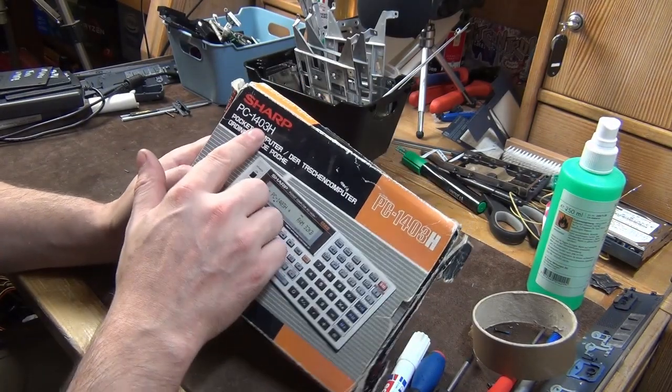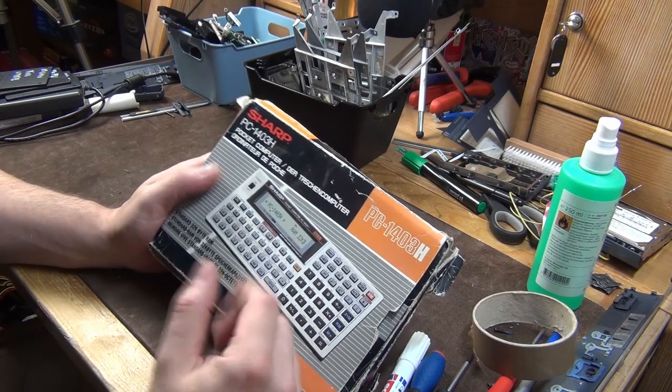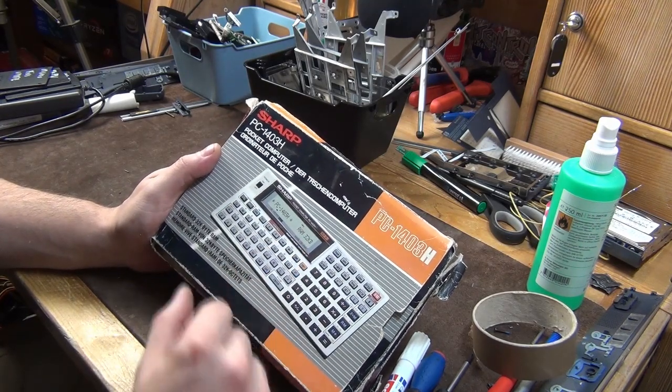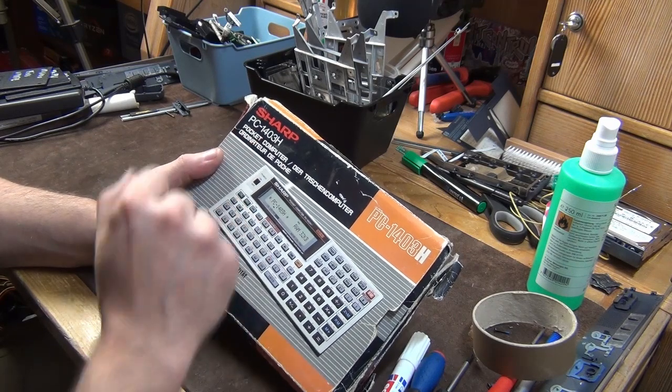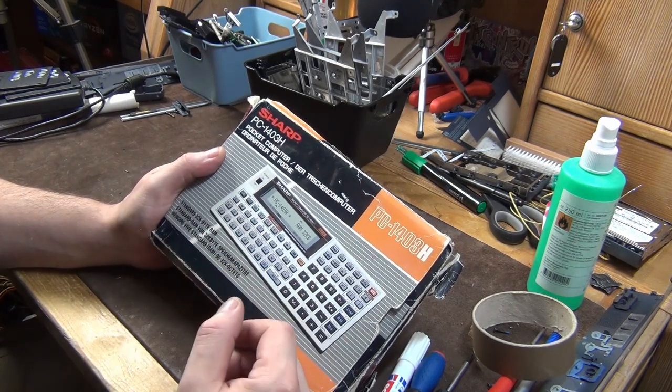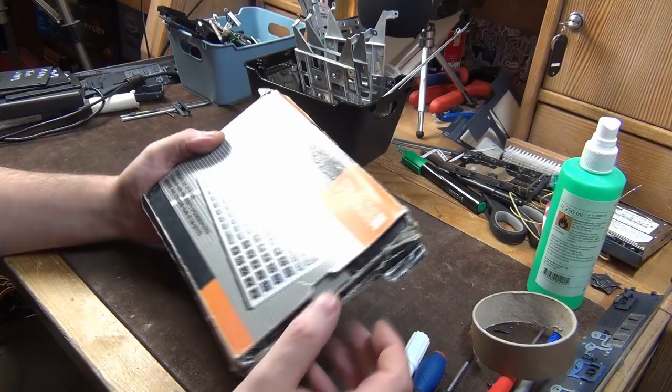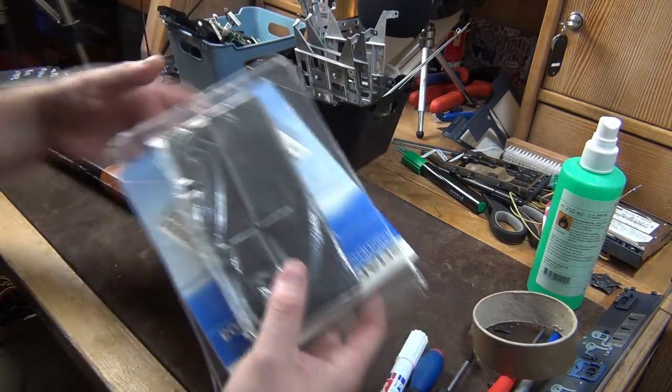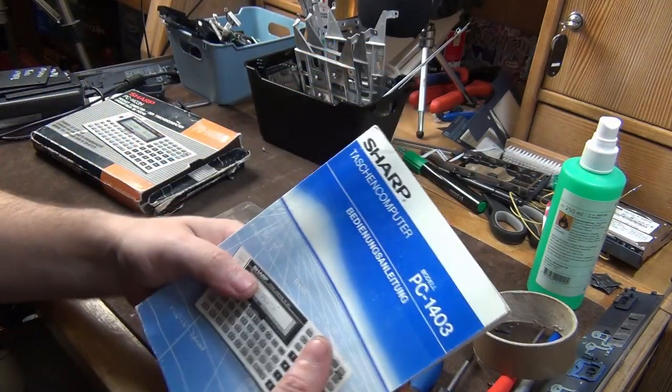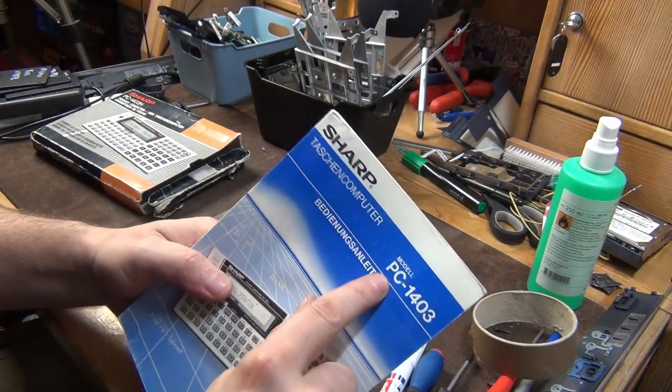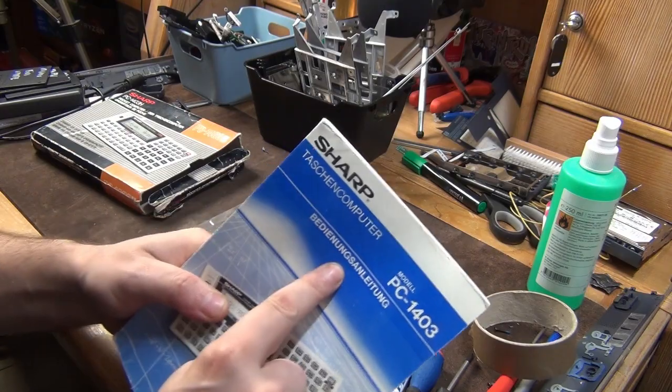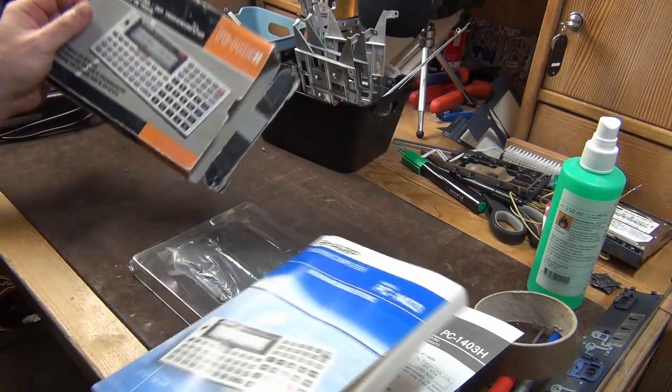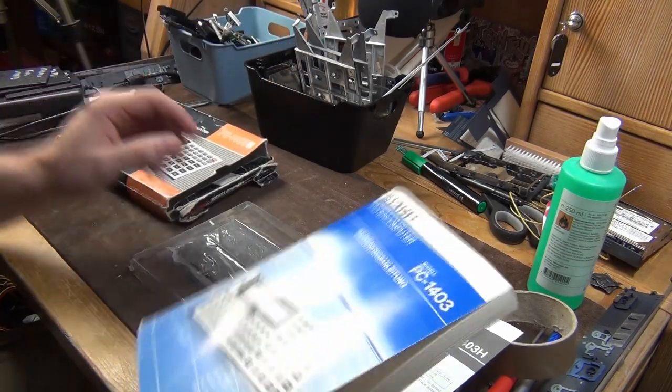This is the PC-1403H. H means this is the extended model of the 1403, which has 32 kilobytes of RAM. The 1403 without H just has 6 kilobytes of RAM. This is a pretty nice model. You see in this box? There is the manual of the Sharp Taschencomputer. Modell PC-1403 Bedienungsanleitung. Yes, it's German.